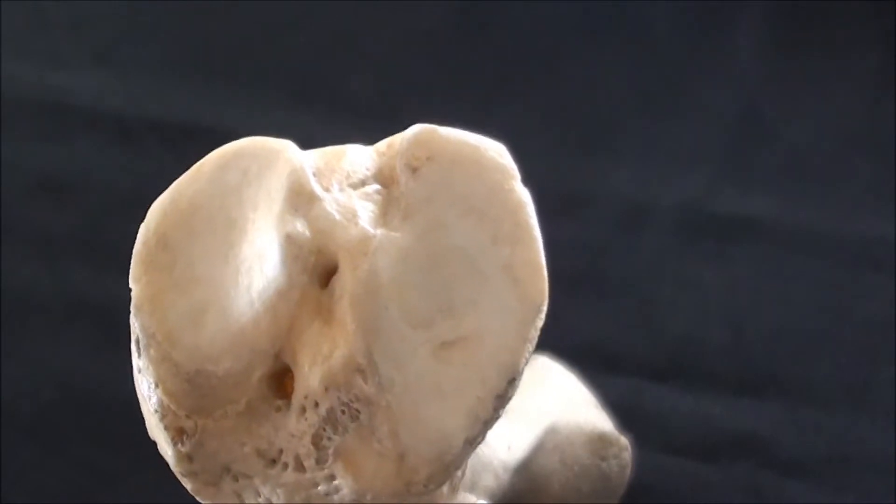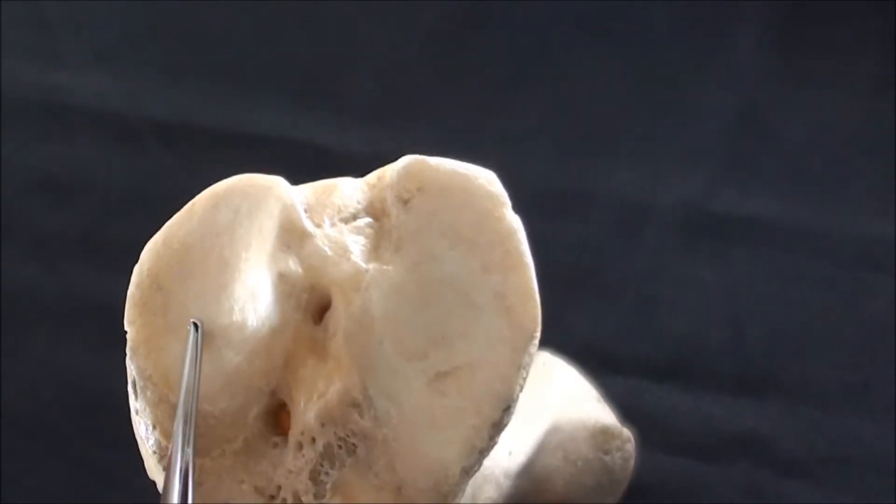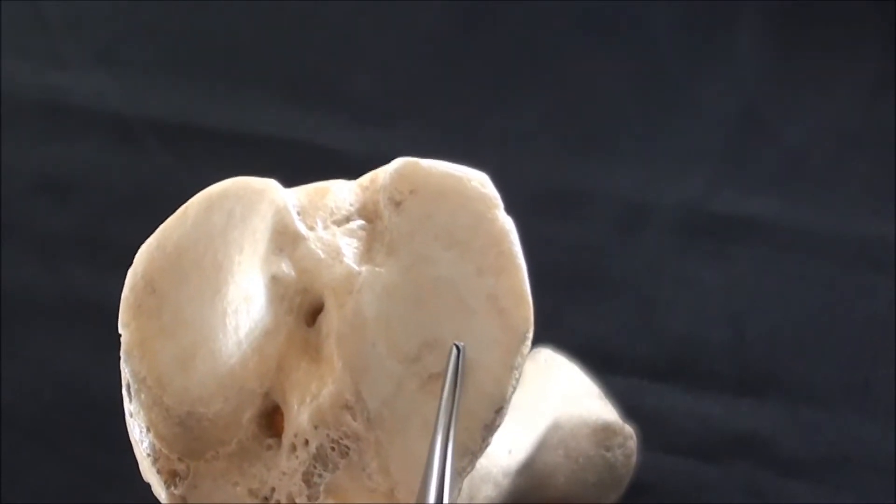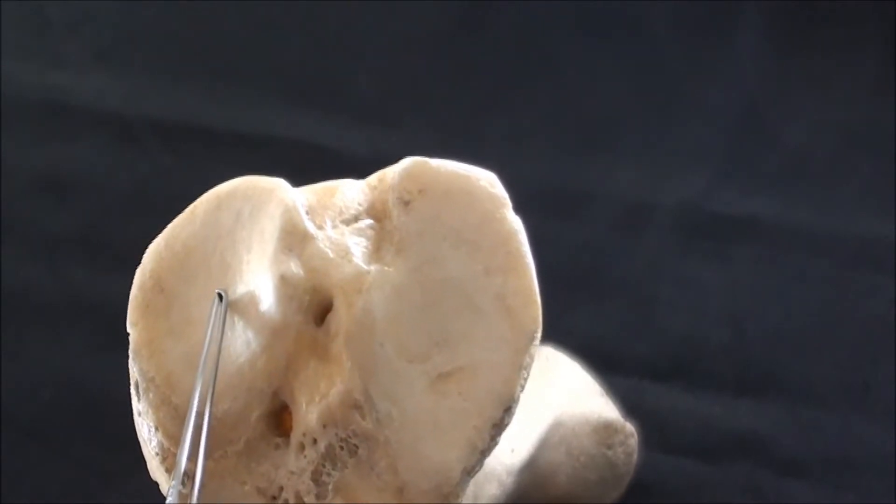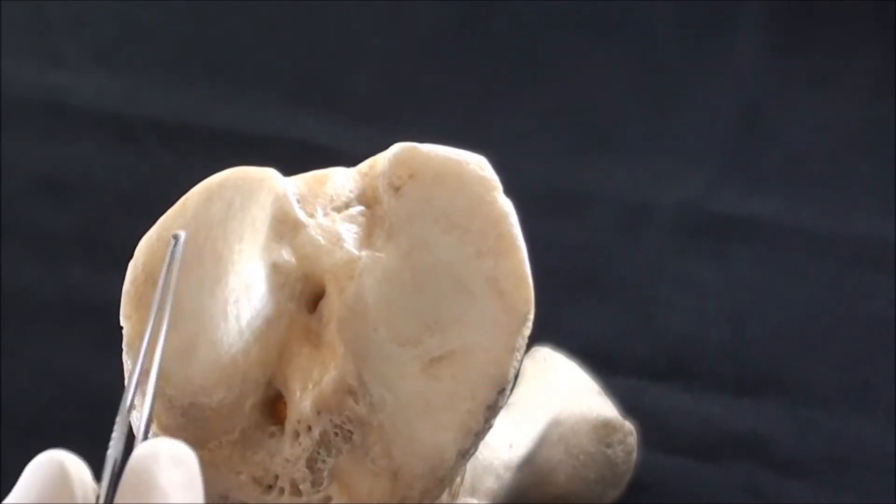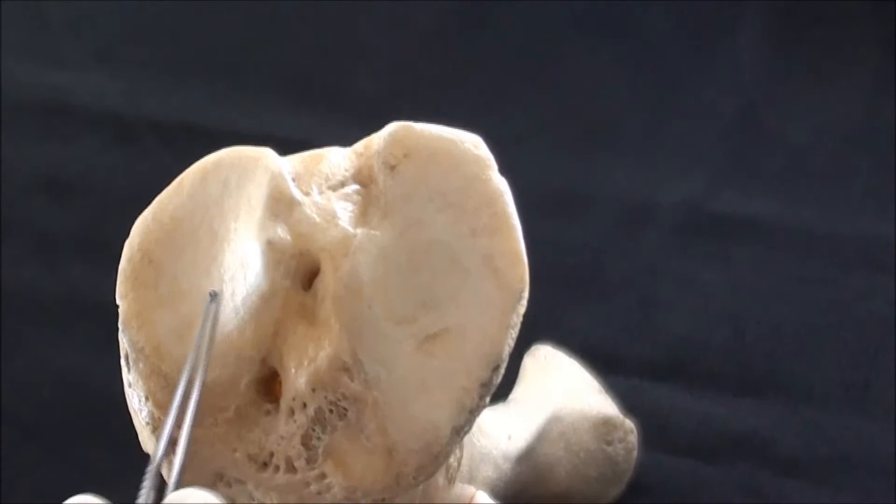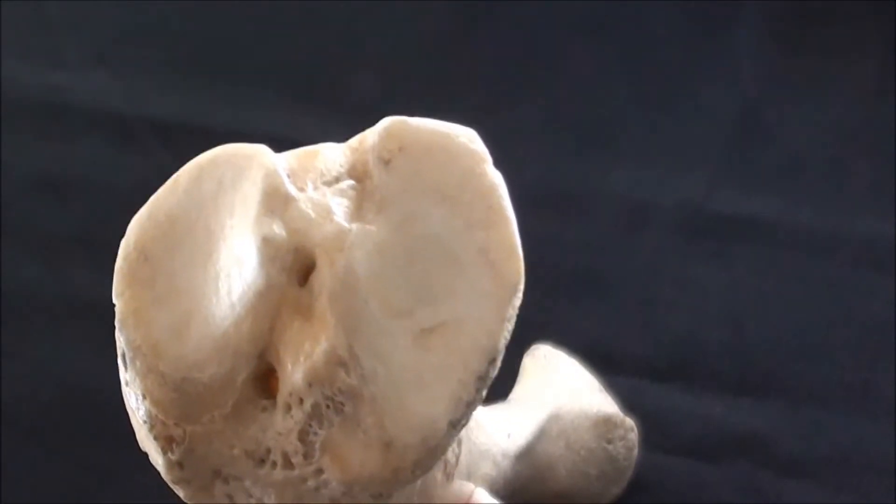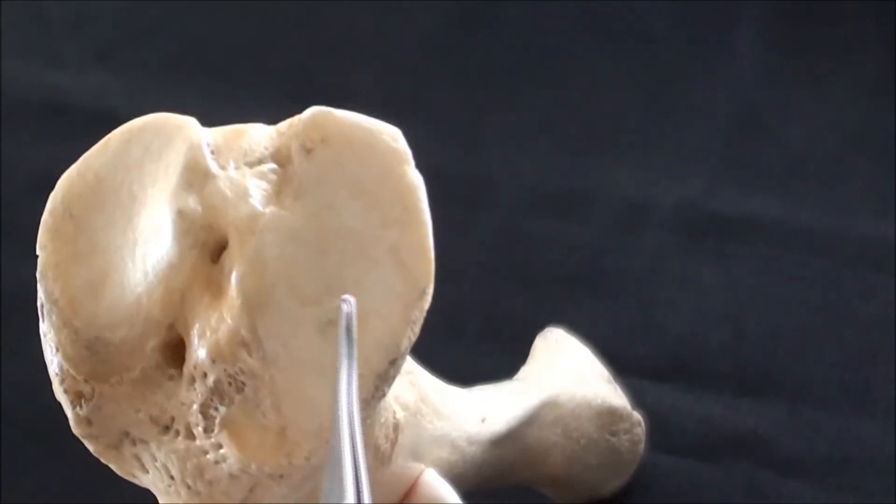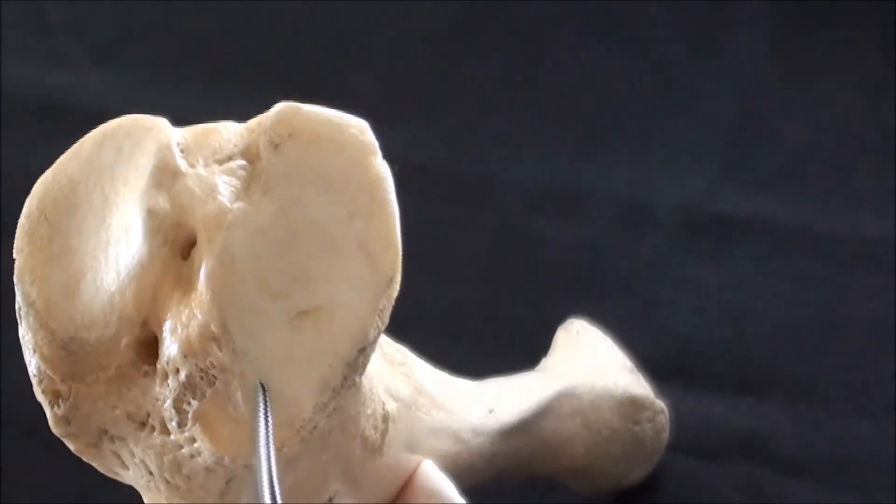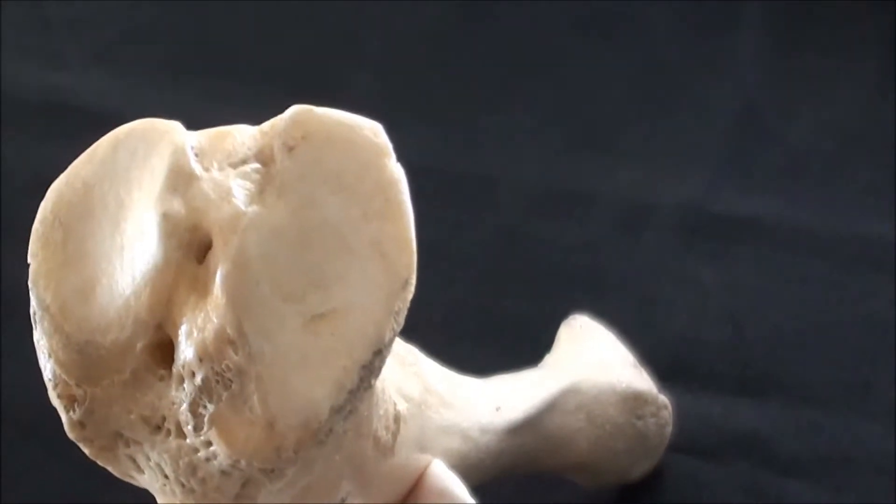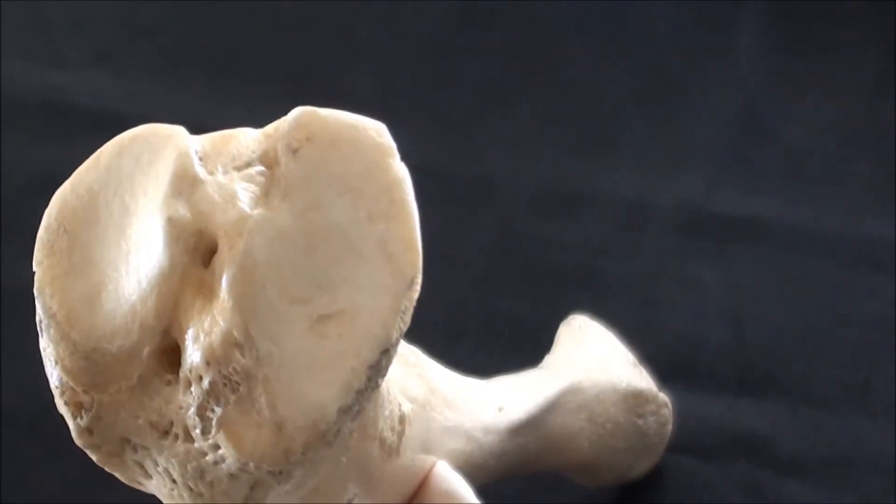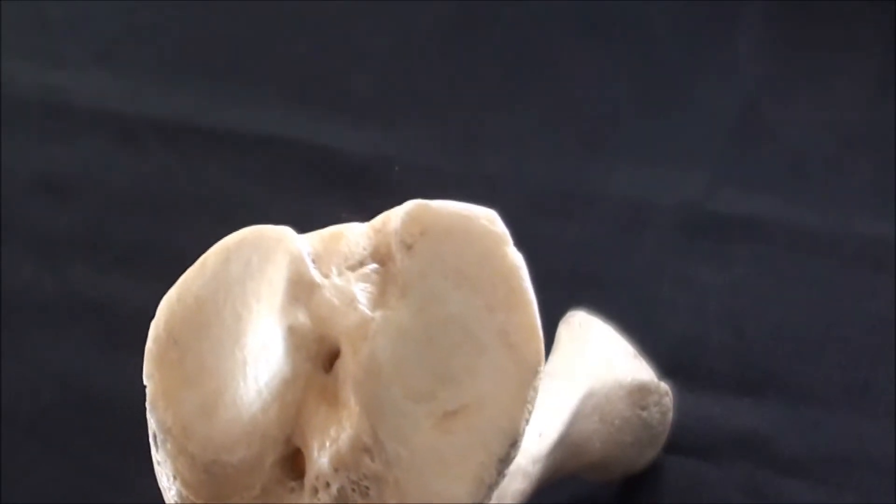This is the superior view of the tibia. As you can see immediately, there are two flattened articular surfaces that are generally known as tibial plateaus. This is the lateral plateau—this is the lateral side of the bone where we expect to have the fibula later on—and a bit larger medial plateau to make contact with the medial condyle of the femur.